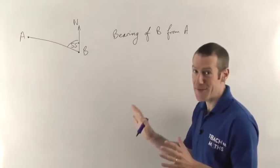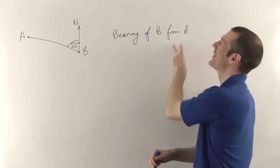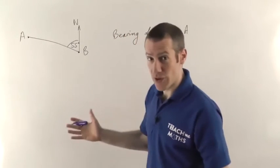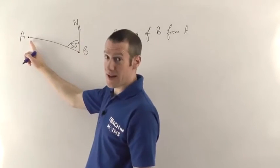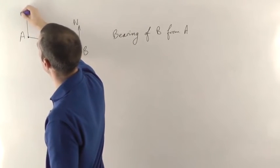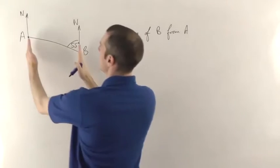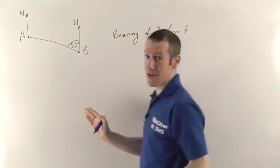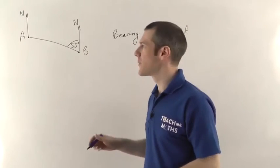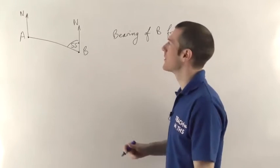Here's the solution. The key thing to focus on is where you're going from — always start with that. It's usually the last bit they give you, so in this case we're going from A. Wherever you're going from, you need a north line at that point. If there isn't one, draw one on — north is always straight up on maps. One important point: the two north lines will be parallel, so you'll need your parallel angles facts for a lot of these bearings questions. You can watch the angle facts video if you're not familiar with those.